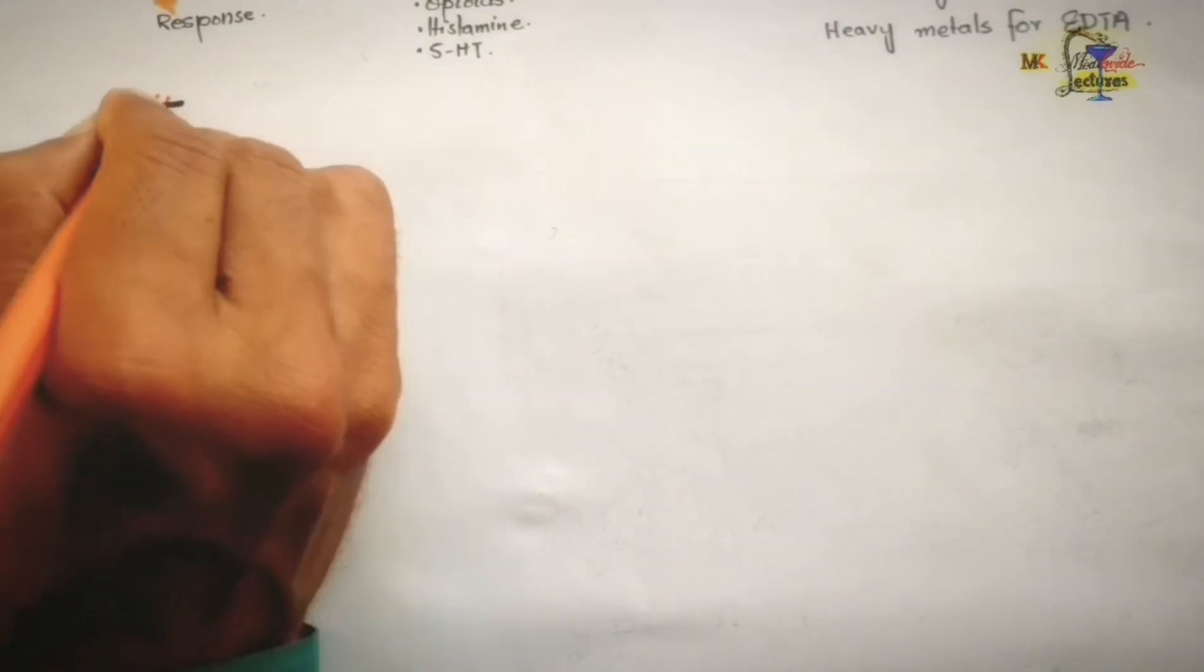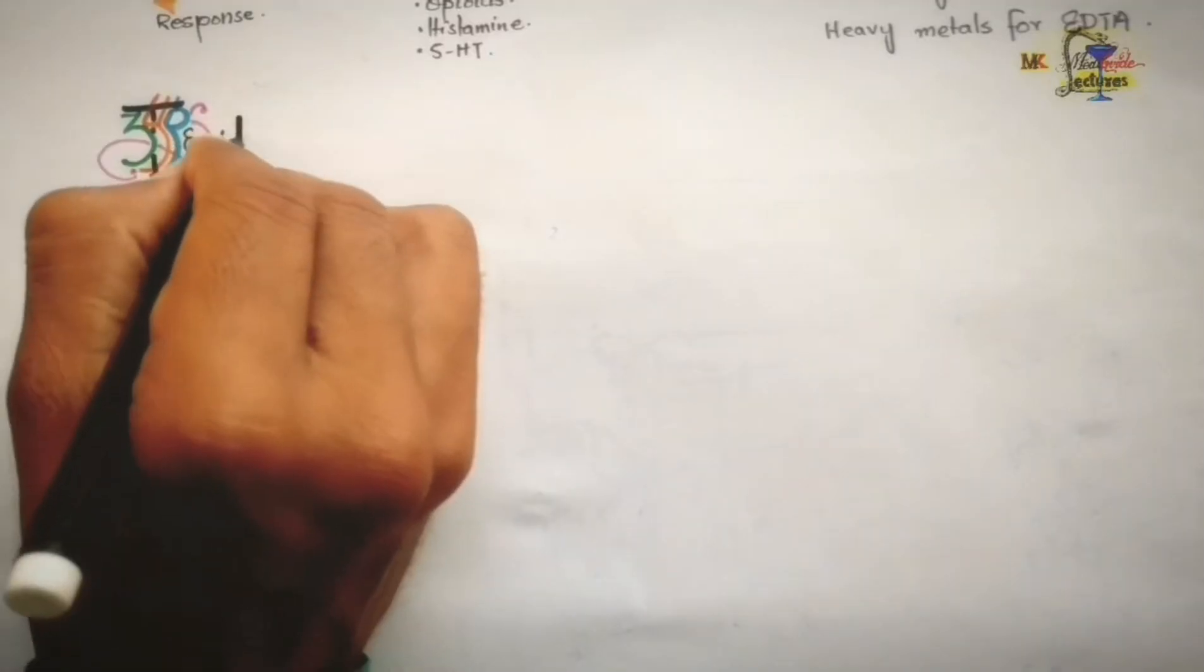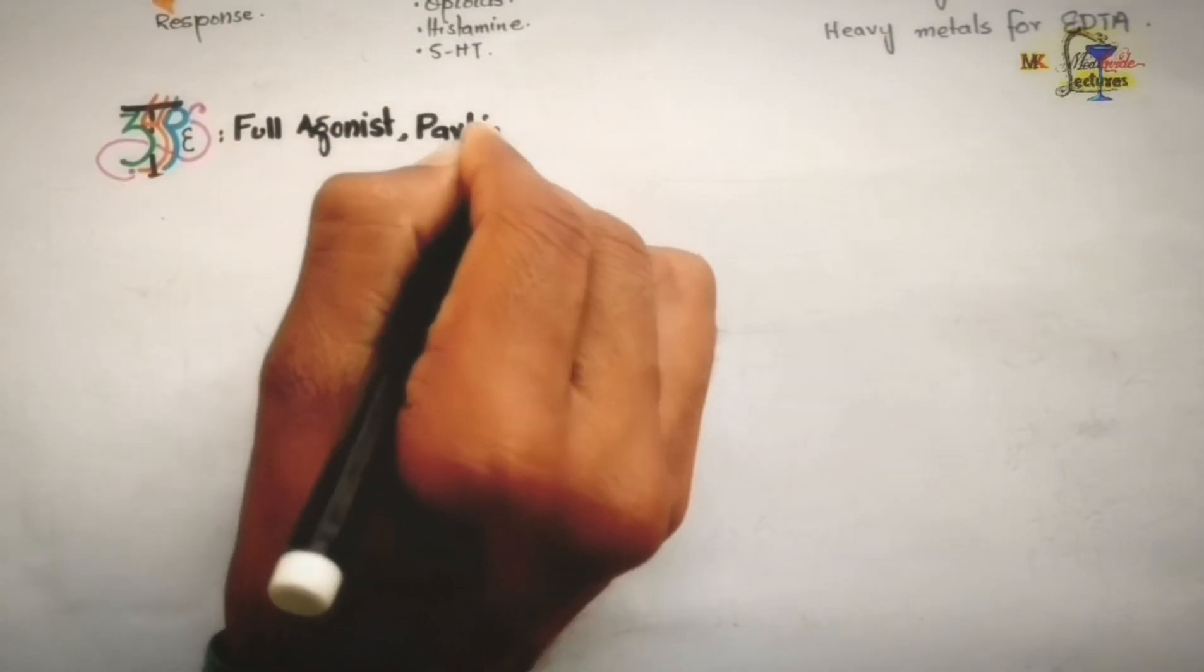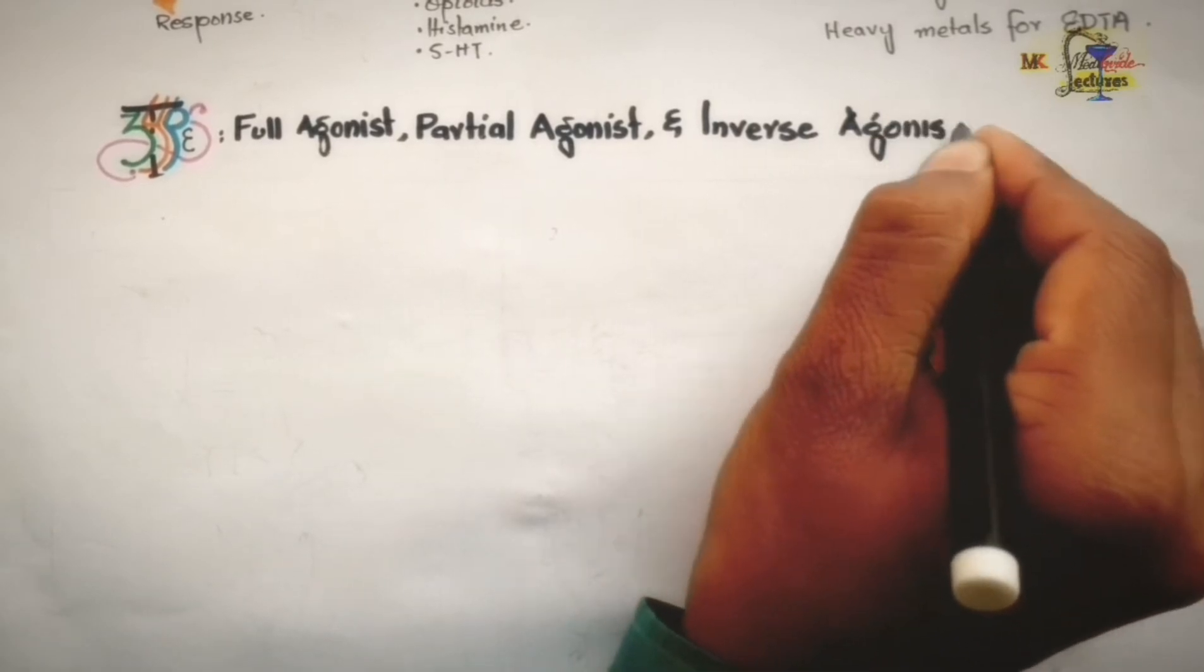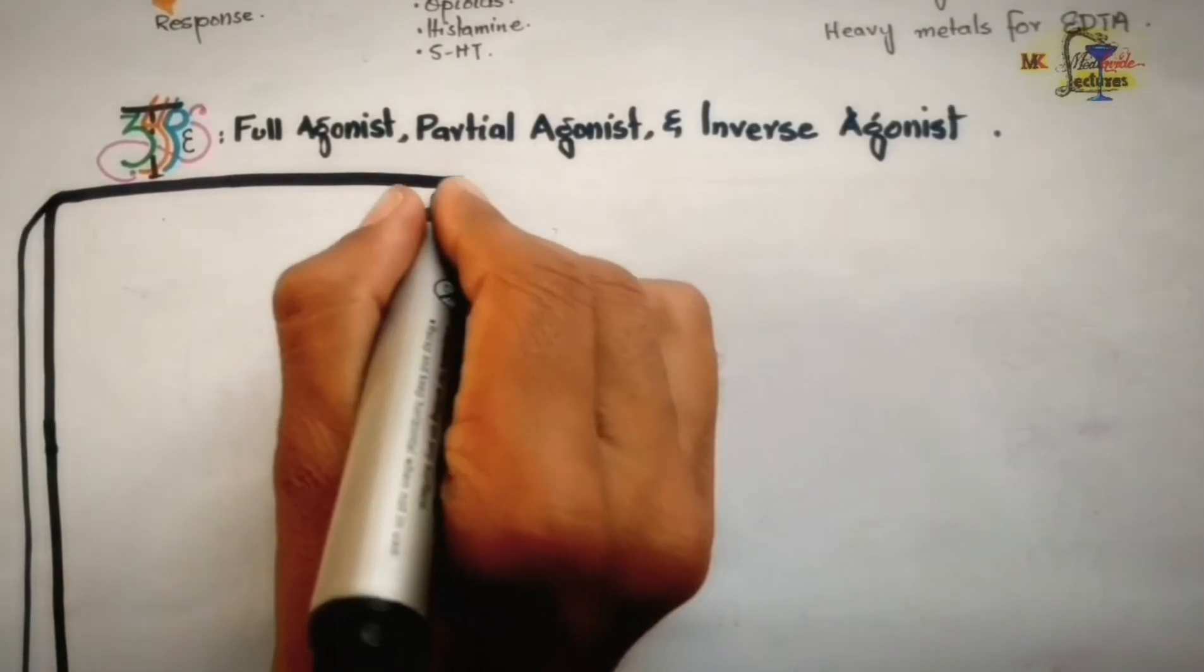The agonists are further subdivided into three types on the basis of their function which are full agonist, partial agonist, and inverse agonist. And another type which is rarely used is allosteric agonist.